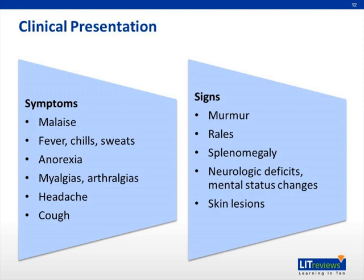When examining the patient, special attention should be given to the skin, digits, conjunctiva, fundi, and obviously the heart. A careful neurologic exam should be performed as well, as patients may present with a focal deficit, since infective endocarditis puts patients at risk for stroke. General confusion and changes in mental status can also be seen. Other signs of infective endocarditis include murmur, rales, splenomegaly, and skin lesions.